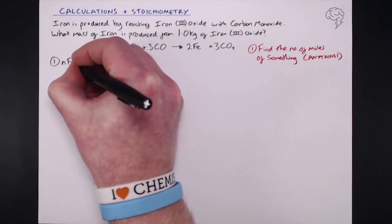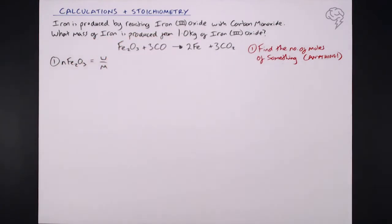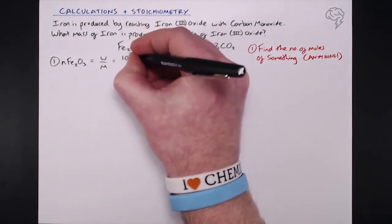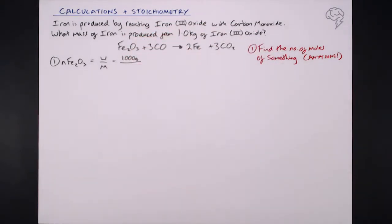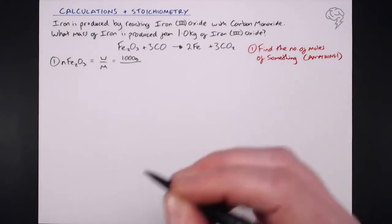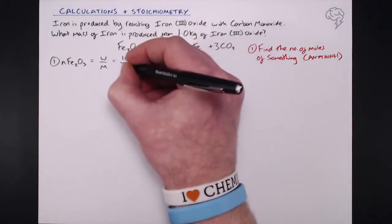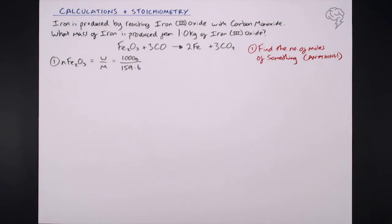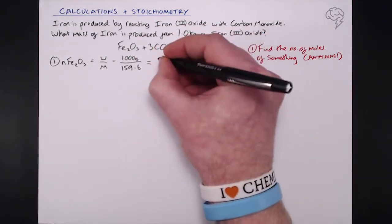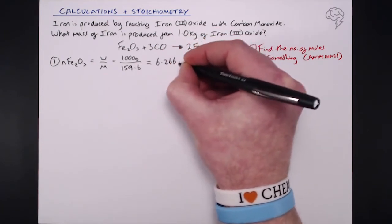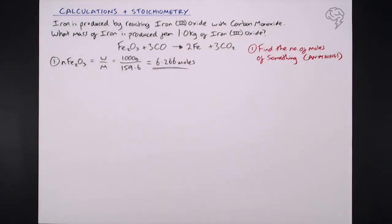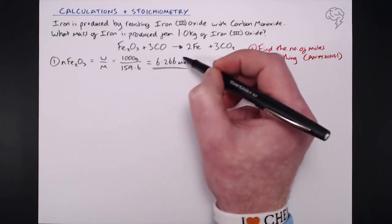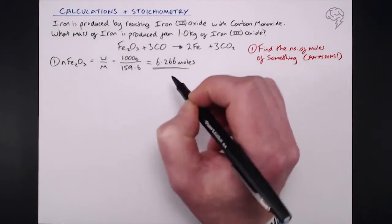Step one: the number of moles of iron oxide equals mass over molar mass. The mass is given as one kilogram, which I'll convert to 1000 grams. Dividing by the molar mass of Fe2O3 — which you can calculate from your periodic table by adding up the Ar values, giving 159.6 g/mol — you get 6.266 moles. Keep the full figure in your calculator for the next step.